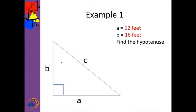Welcome back. Now here's my first example. On your note taker, please fill in that A is going to be 12 feet long and B is 16 feet long. In these slides, A, B, and C may not always be to scale, so although side A might look longer it's only 12 feet — just go with that. We want to find the hypotenuse, so let's go ahead to my slate.